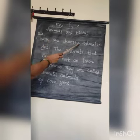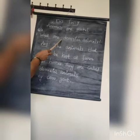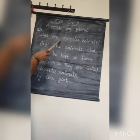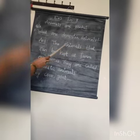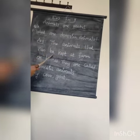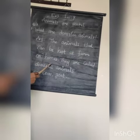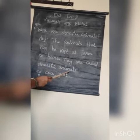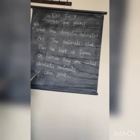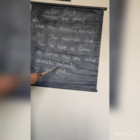What are domestic animals? Answer: The animals that can be kept at a farm or homes are called domestic animals. Example: cow and goat.